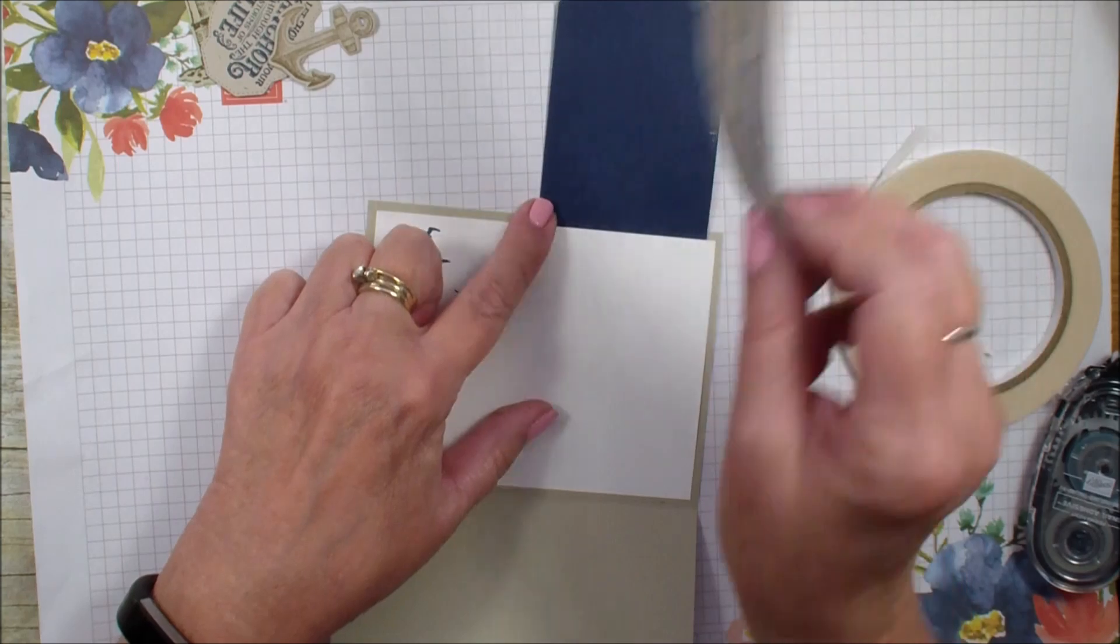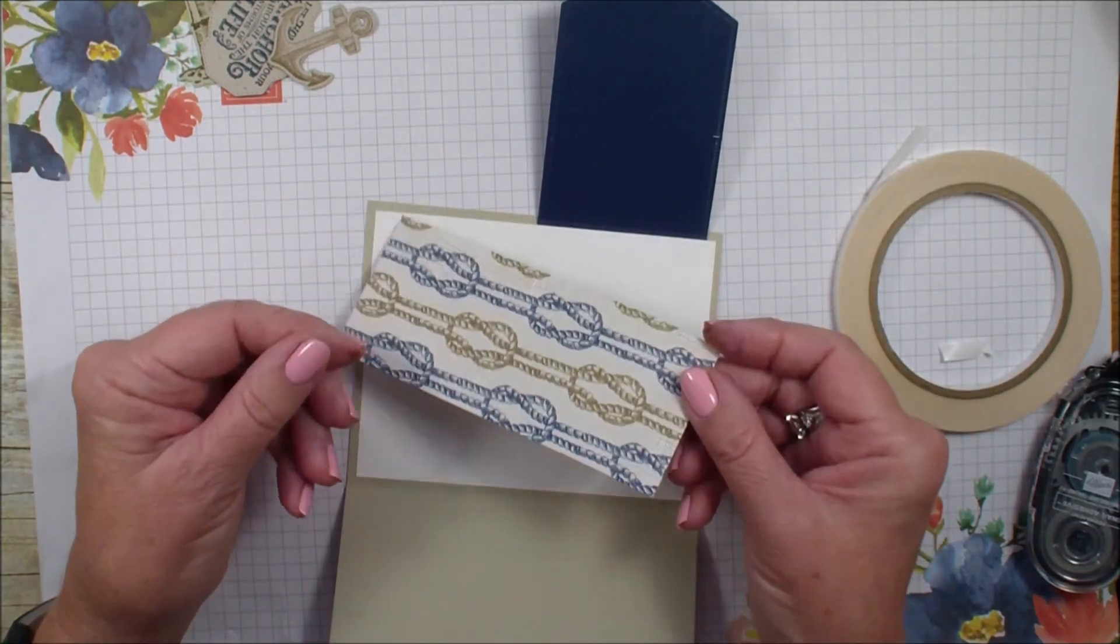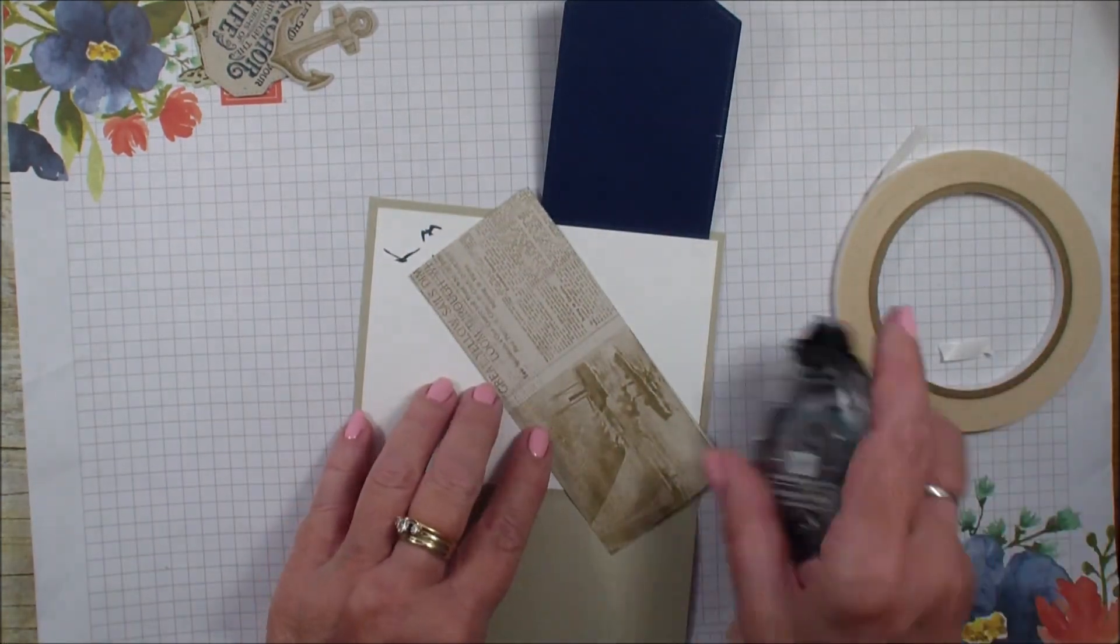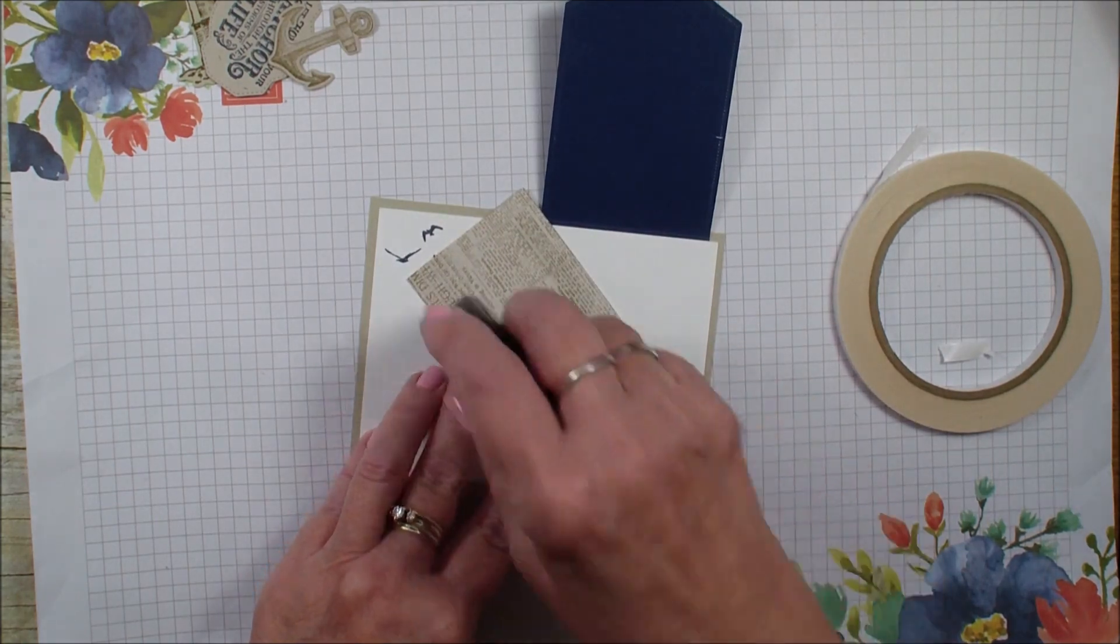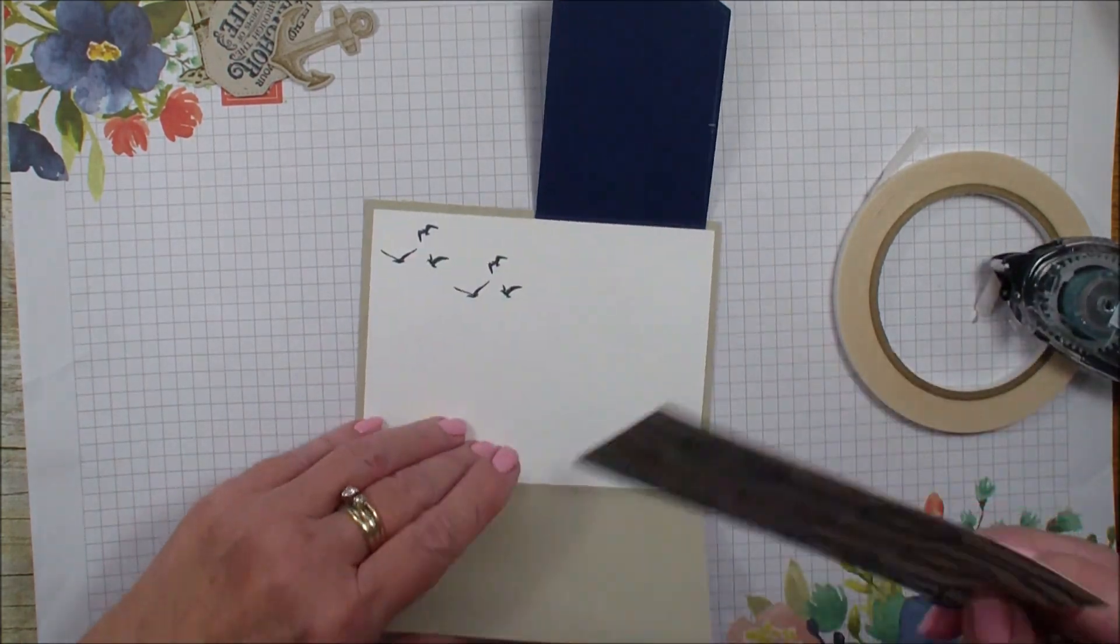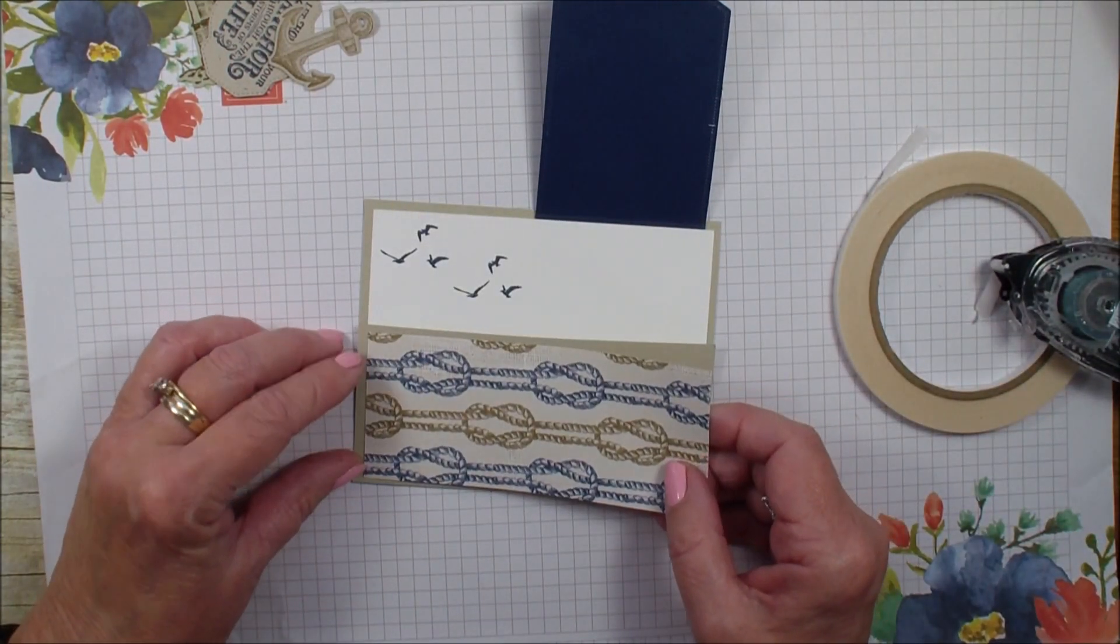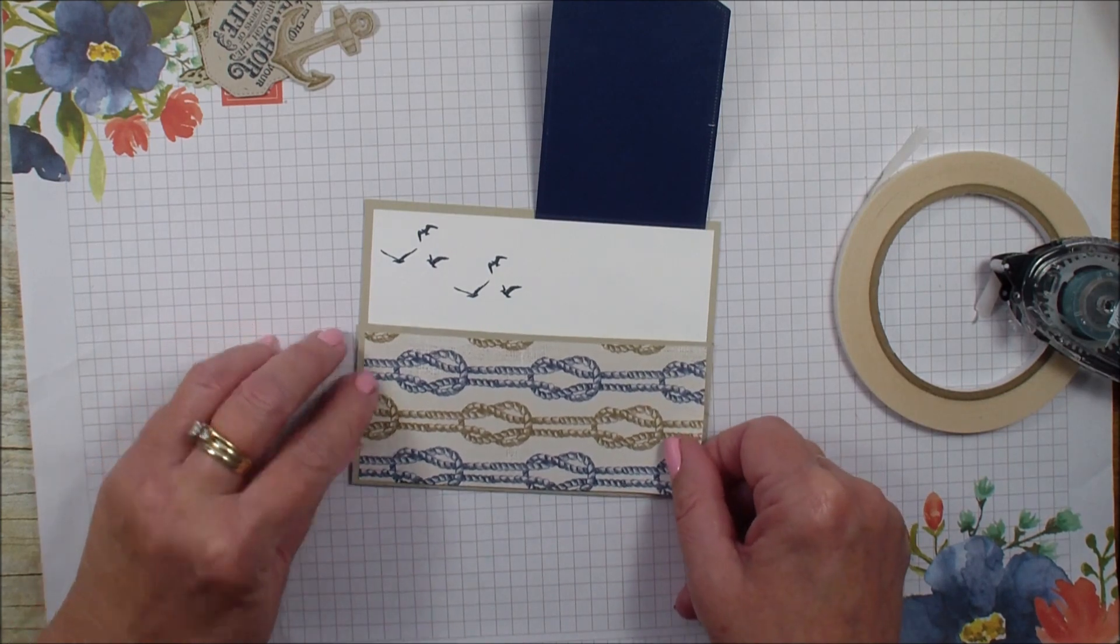I'm going to grab that piece of Designer Series Paper and this measures two and a quarter by five and a quarter. We're going to put that down here on that front flap.